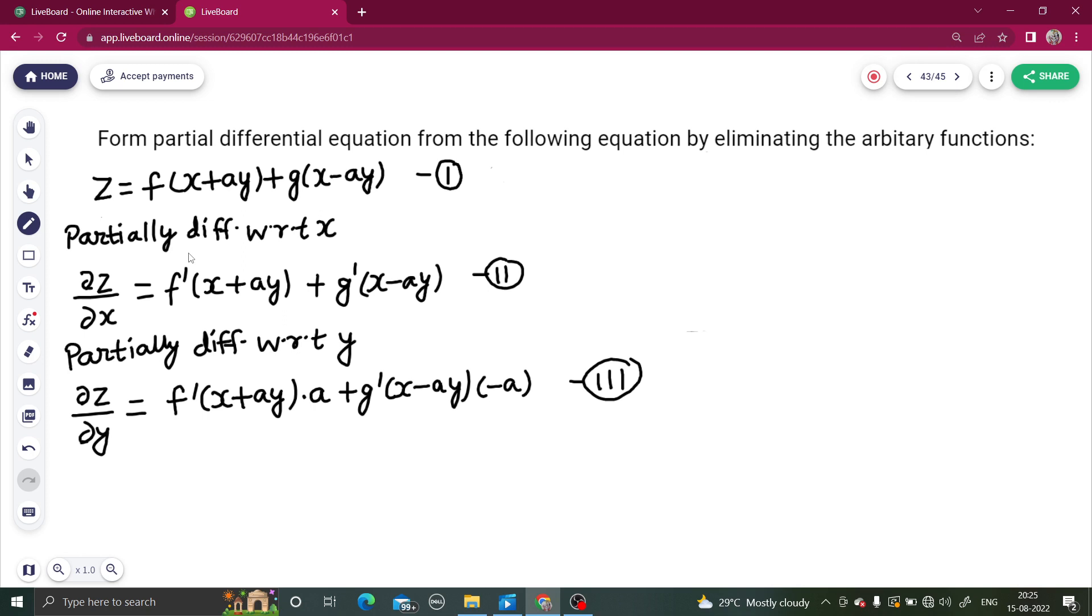What we will do is again differentiate equation number 2 and 3. This was your p, this is your q. If I want, I can differentiate p again. So differentiate equation 2 with respect to x. Either you write this as del p by del x, or this is same as del 2 z divided by del x square. Both are same thing.